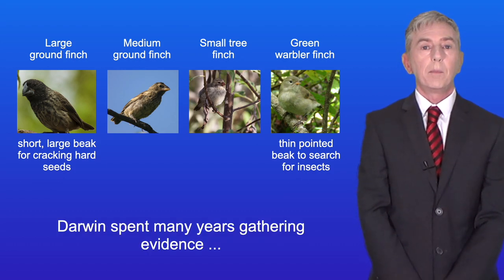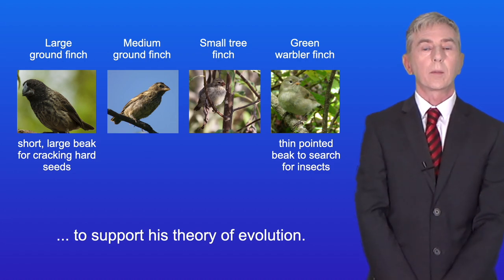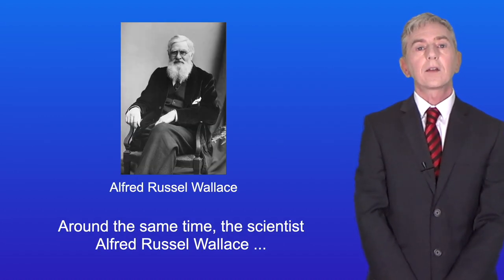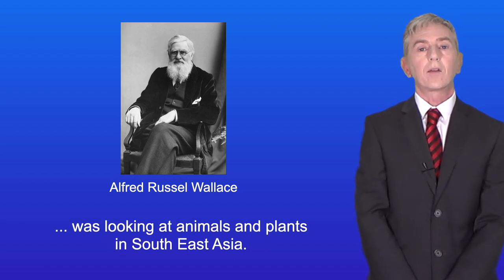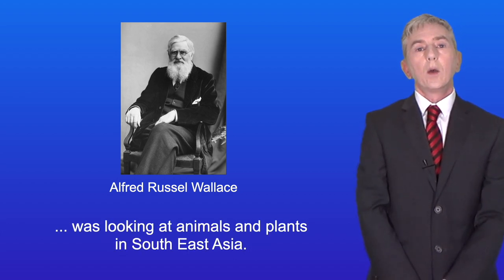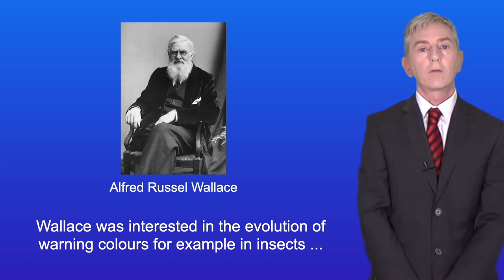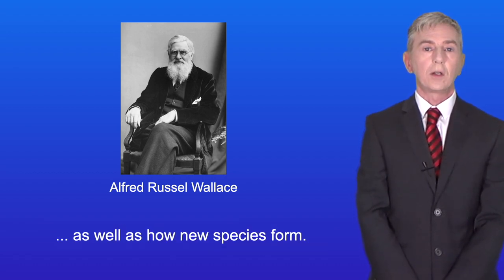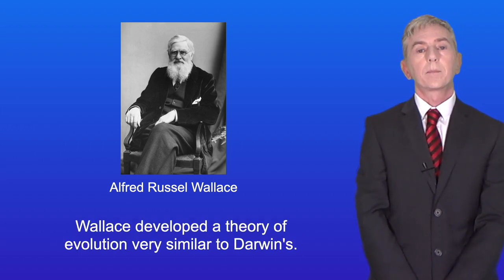Darwin spent many years gathering evidence to support his theory of evolution. Around the same time, the scientist Alfred Russell Wallace was looking at animals and plants in Southeast Asia. Wallace was interested in the evolution of warning colours, for example in insects, as well as how new species form. Wallace developed a theory of evolution very similar to Darwin's.